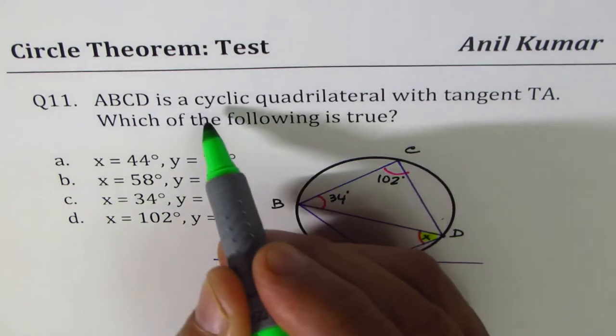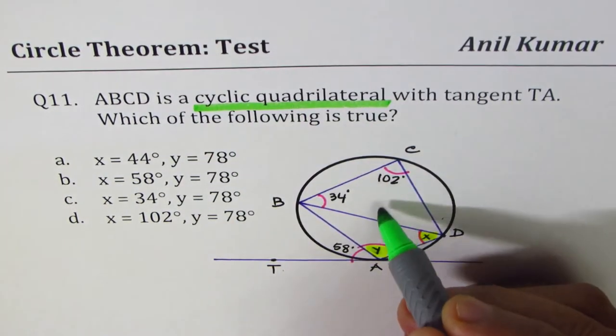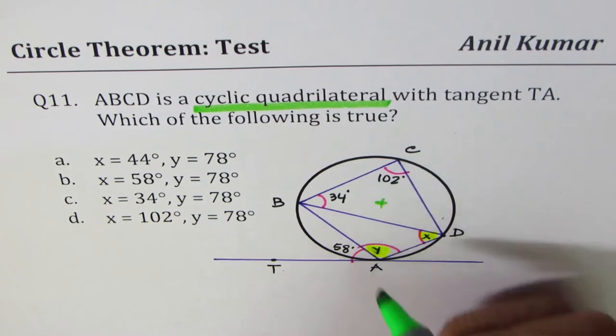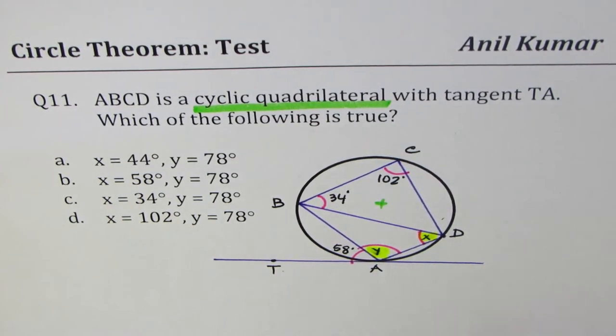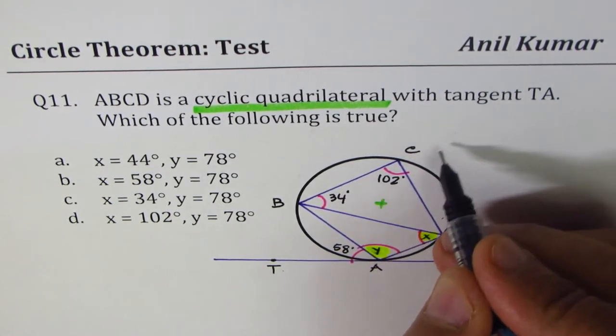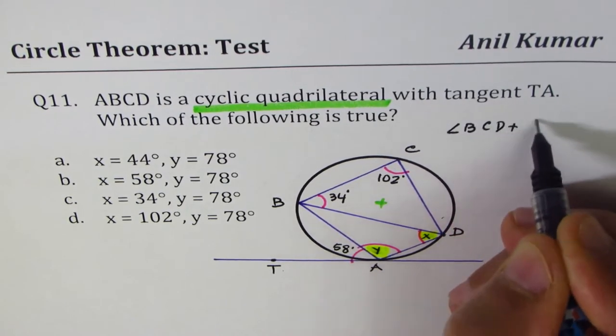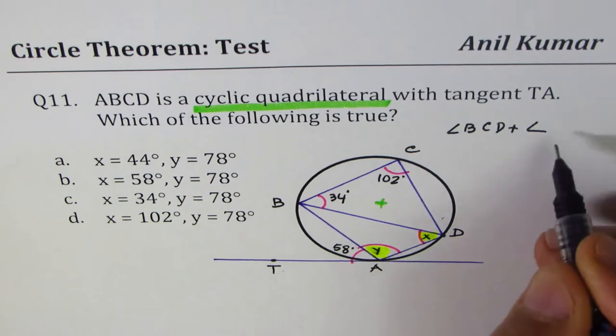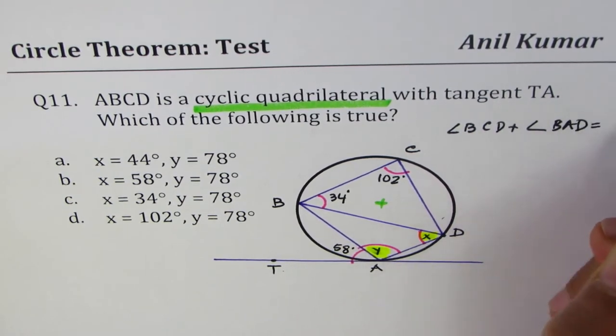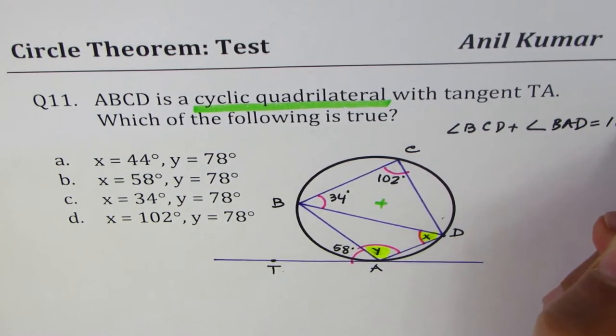Cyclic quadrilateral means also that sum of opposite angles is 180 degrees. And therefore, angle BCD plus angle BAD should be equal to 180 degrees.